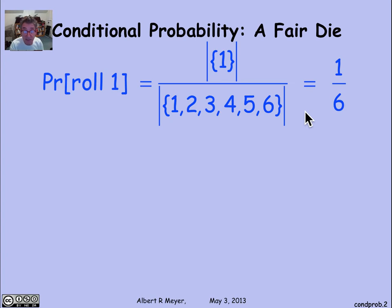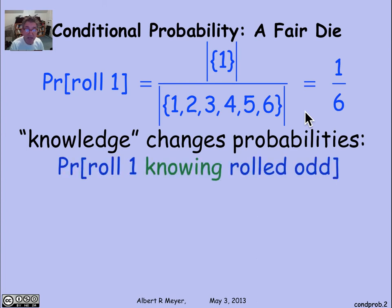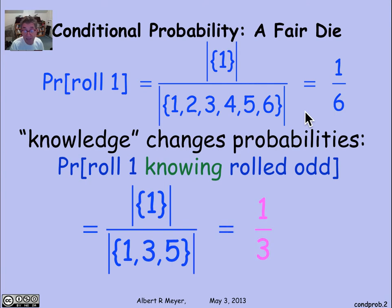But suppose I give you some additional information. Knowledge about the roll can change the judgment of probabilities. Suppose I tell you that I rolled an odd number — now what's the probability that I rolled a 1? Given that it's an odd number, the only possibilities are 1, 3, and 5. So the probability has changed to 1/3.